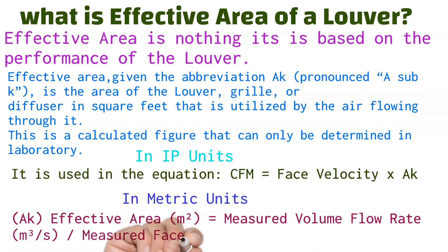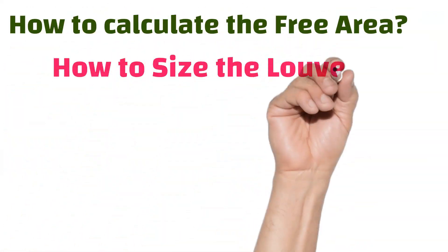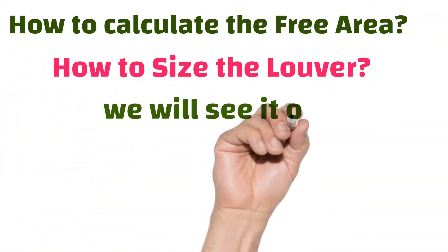In IP units, A_k is used in the equation: CFM = face velocity × A_k. In metric units, effective area in square meters equals the measured volume flow rate in cubic meters per second divided by the measured face velocity in meters per second. How to calculate the free area and how to size the louver will be covered in the next part of this video.